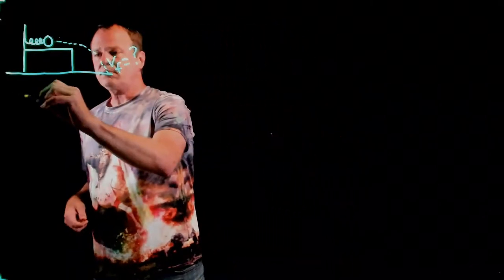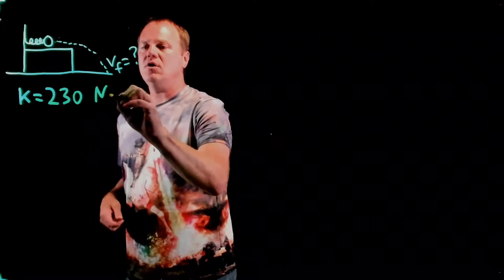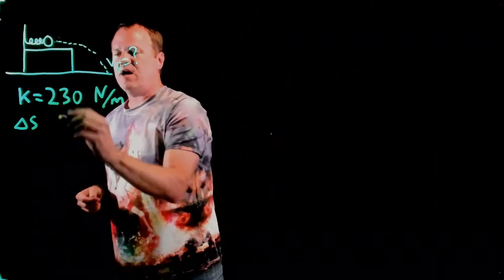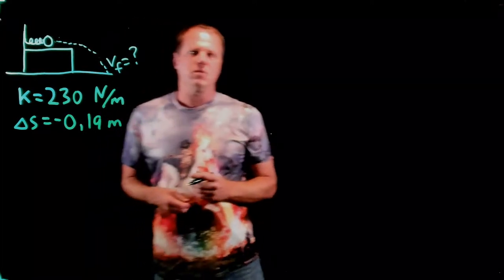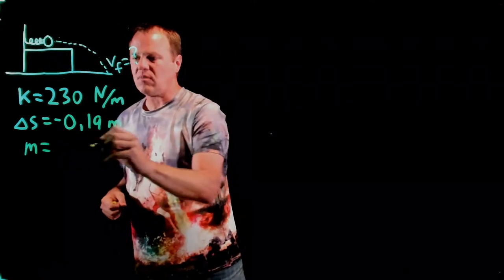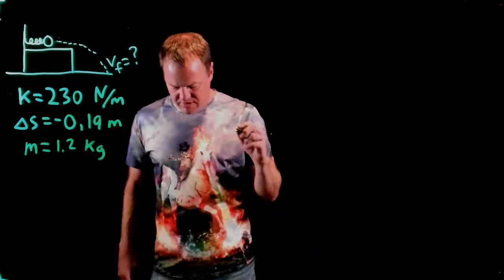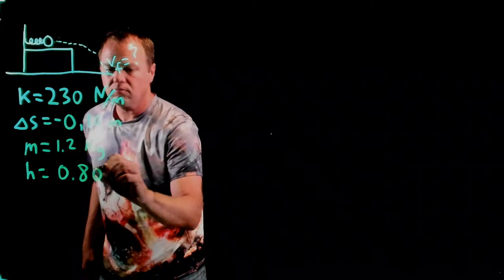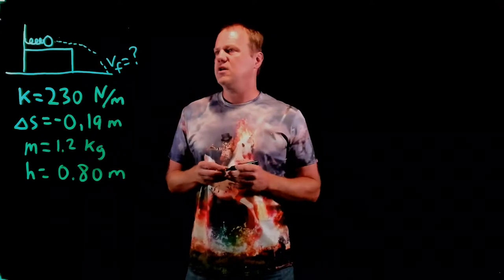We know that the spring constant, that's a measure of how strong the spring is, is 230 newtons per meter. We also know that the spring has been compressed, so it's compressed to the left. So I'm going to use a minus sign here. It's not going to matter if we ignored it, but I'm going to go ahead and include it. So it's compressed 19 centimeters to the left. We also know that the mass of the ball is 1.2 kilograms, and we know that the height of the table is 0.80 meters. So that's all the data we need. We should be able to calculate the velocity of impact.